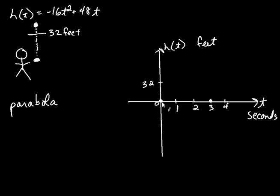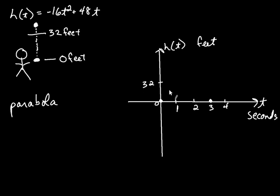One point is where the time is zero and the height is zero — that makes sense because when the time is zero the ball is starting off at zero feet. After three seconds, the ball is back in your hand, so the ball is at zero feet at the beginning and at the end, three seconds later. When is the ball at 32 feet? After one second, and also after two seconds.